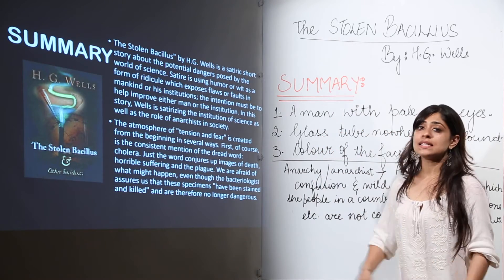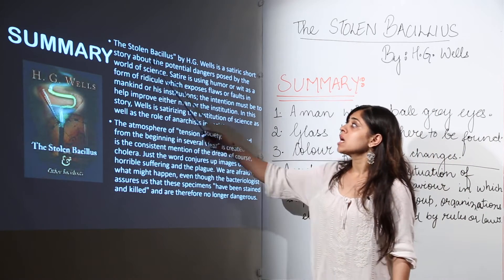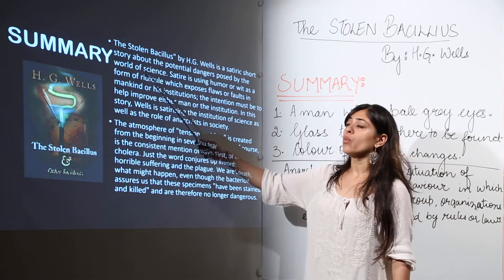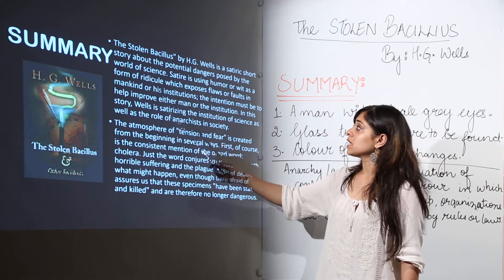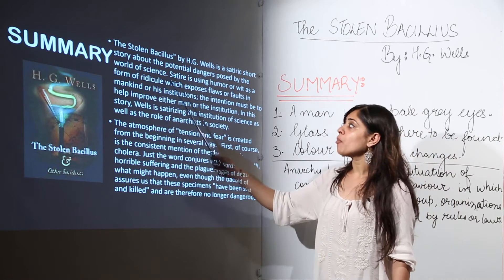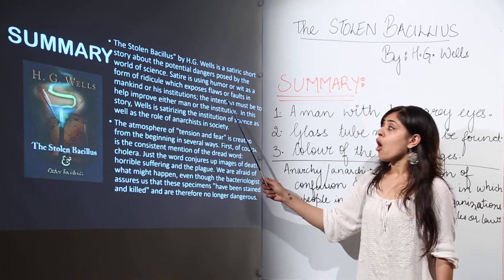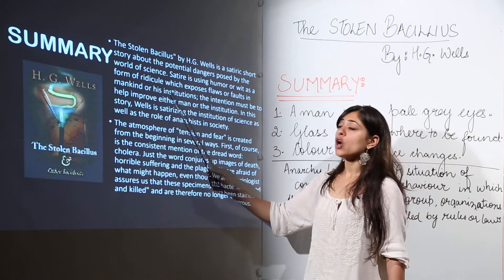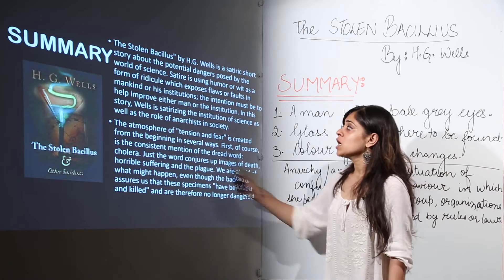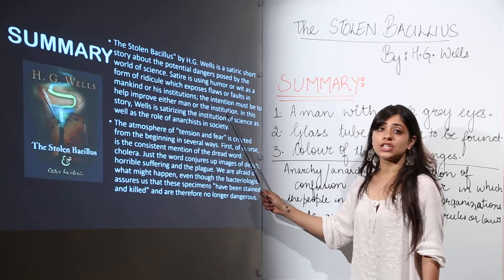'The Stolen Bacillus' by H.G. Wells is a satiric short story about the potential dangers posed by the world of science. Satire is using humour or wit as a form of ridicule which exposes flaws or faults in mankind or his institutions. The intention must be to help improve either men or the institution.